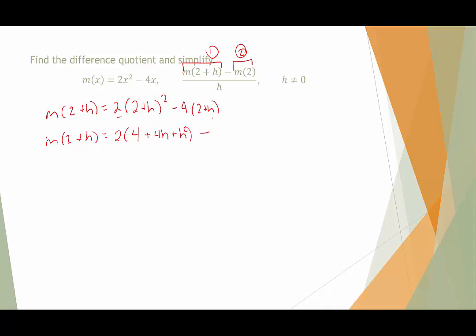Minus, and I'm going to distribute this minus 4, that's going to be minus 8 minus 4h. Next we have m(2+h), and we're going to distribute the 2, that's going to be 8 plus 8h plus 2h squared, minus 8 minus 4h.